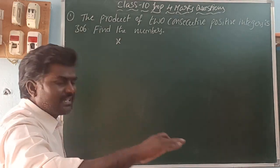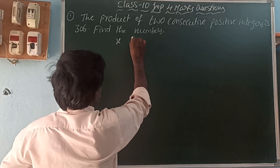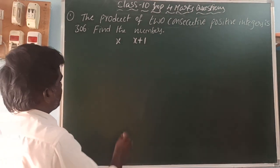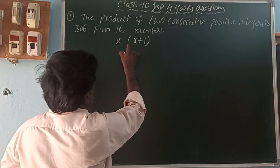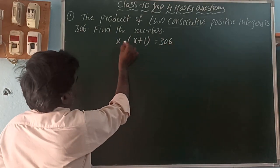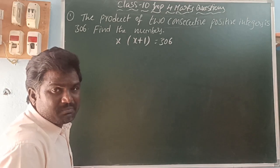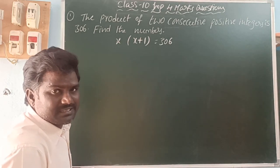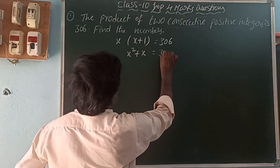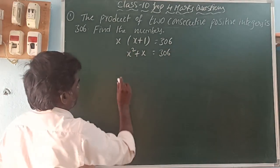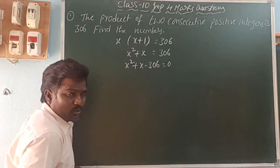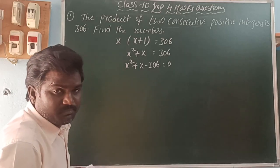Consecutive means the numbers are in order, so the next number is x plus 1. The product of two consecutive positive integers means x times (x+1) equals 306. Using the distributive property, x(x+1) = x squared plus x, so x squared plus x minus 306 equals zero.